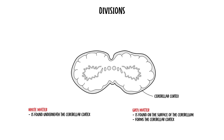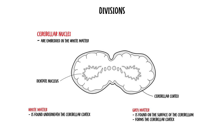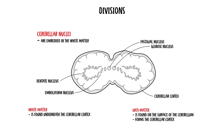The four cerebellar nuclei are embedded in the white matter of the cerebellum. These are called the dentate, emboliform, globose and fastigial nuclei.